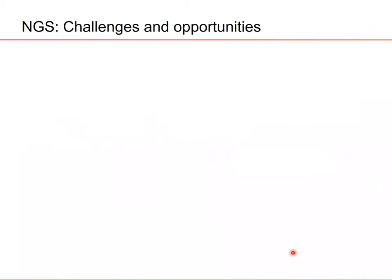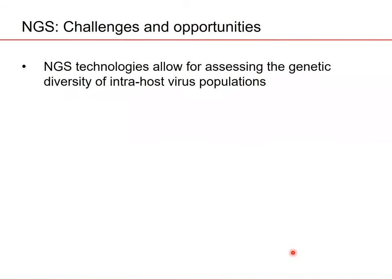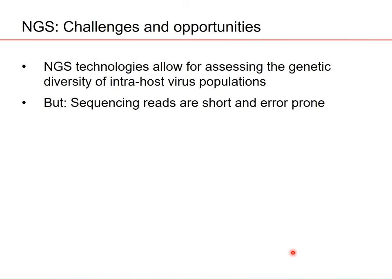Using NGS for viral sequencing and viral diagnostics comes with a number of opportunities but also challenges. NGS technologies allow for assessing the genetic diversity of intra-host virus populations, but this task is complicated by the fact that sequencing reads tend to be much shorter than the genomic interval of interest. Second, these short reads are typically error-prone — both the amplification process and the sequencing step itself introduce errors, and these technical errors need to be separated from the true biological variation in the sample.